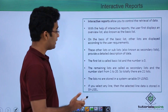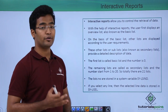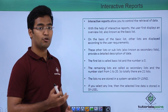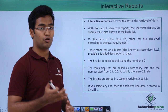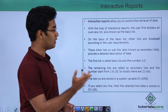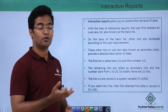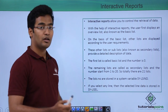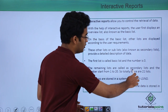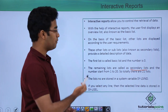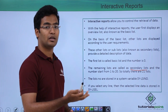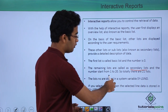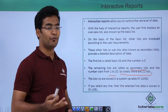So what exactly are interactive reports? Interactive reports allow you to control the retrieval of data. With the help of interactive reports, the user first displays an overview list, also known as the basic list. Then there are multiple other lists that follow when the user double clicks on a particular list item, and the second overview list is called the secondary list. There can be 20 secondary lists, so in total there can be 21 lists.